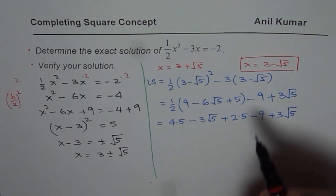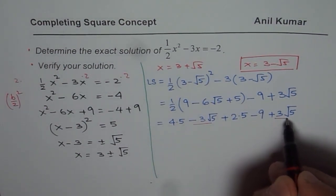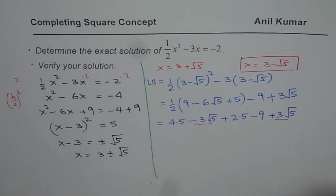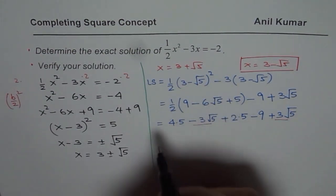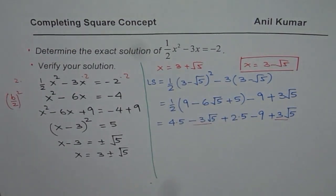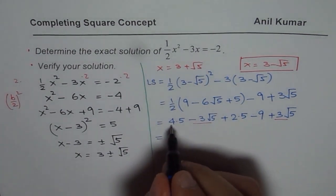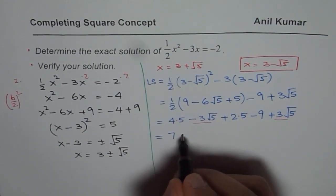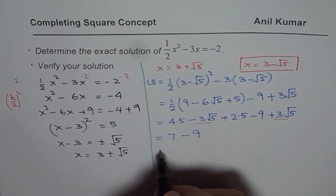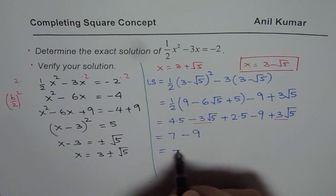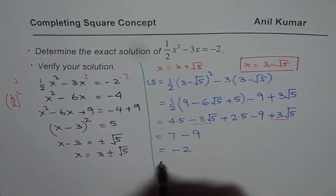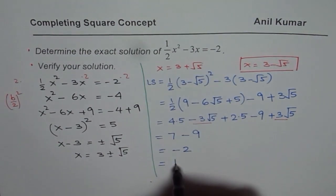Now 3 square root 5 and 3 square root 5 cancels out and what are we left with, okay? Let's write down. So we are left with 4.5 plus 2.5 which is 7, right? So 7 minus 9 and that is indeed equal to minus 2. So we are left with minus 2 which is equal to the right side.